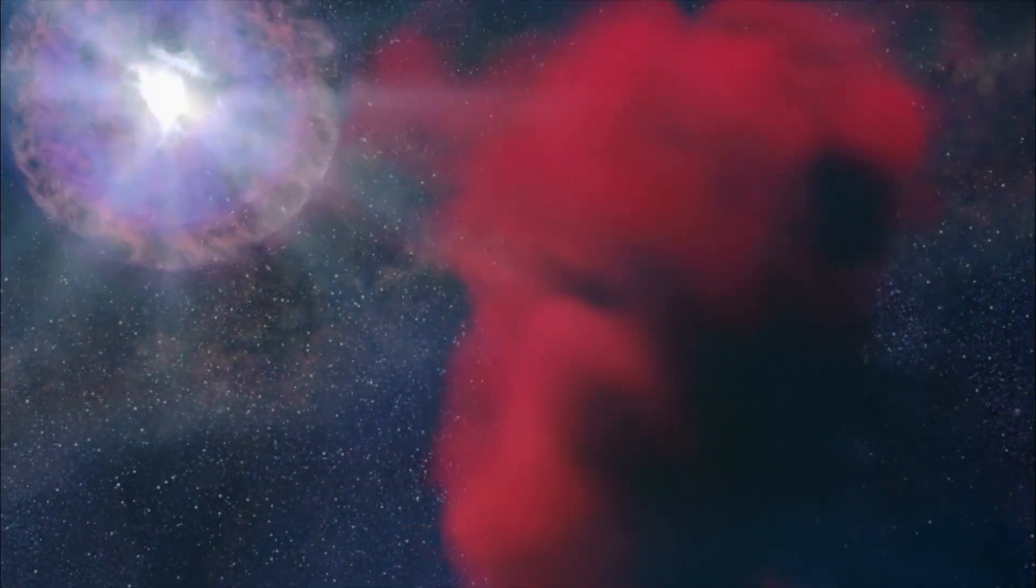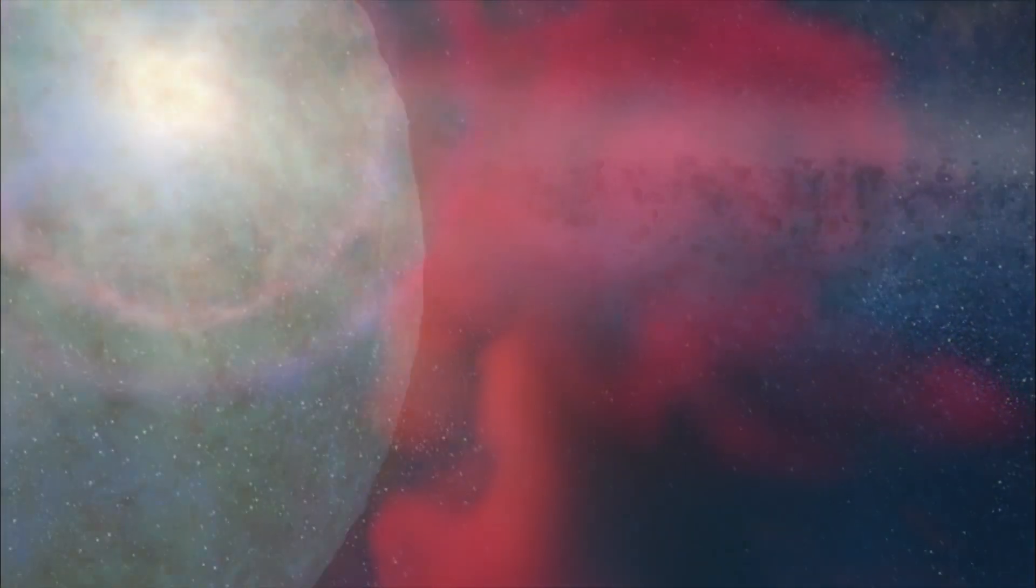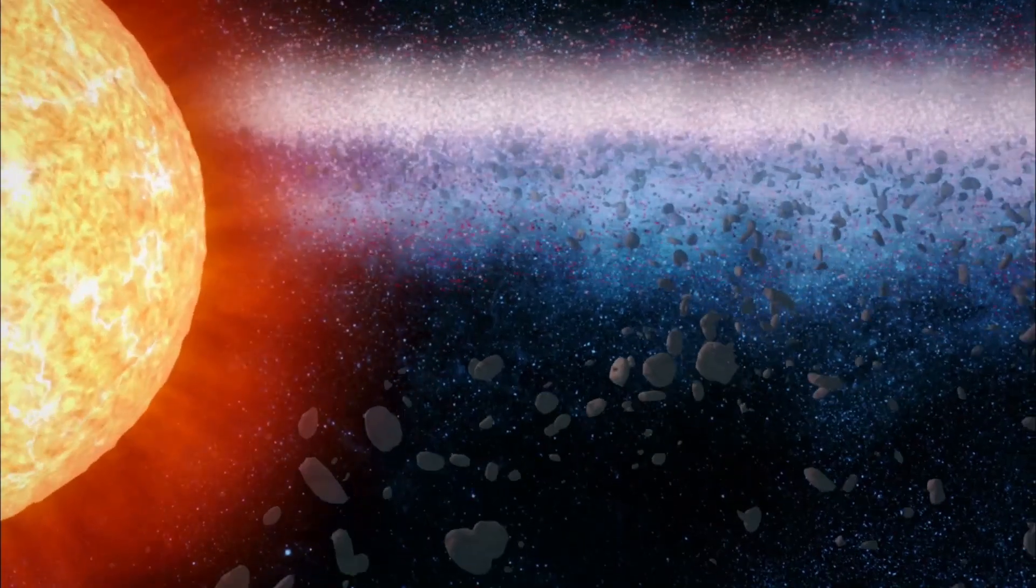Beginning as a cloud of gas and dust, the making of our solar system will take 700 million years.